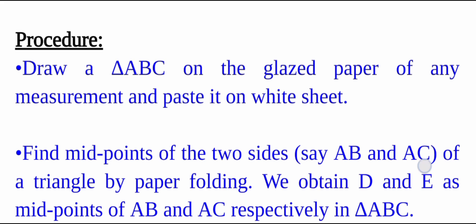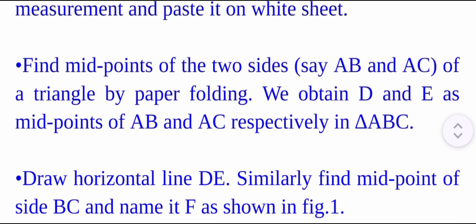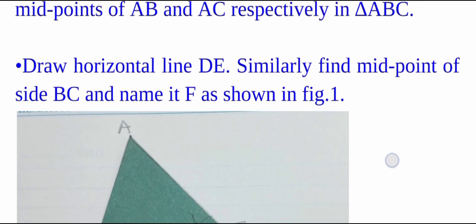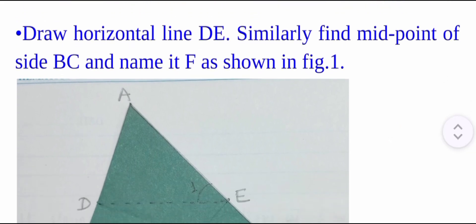Step 2: Find the midpoints of two sides — say AB and AC — of the triangle by paper folding. We obtain D and E as the midpoints of AB and AC respectively in triangle ABC. Then draw horizontal line DE. Similarly, find the midpoint of side BC and name it F, as shown in the figure.